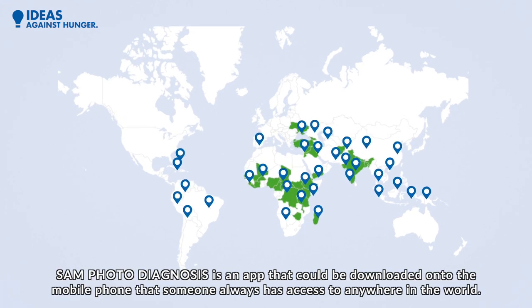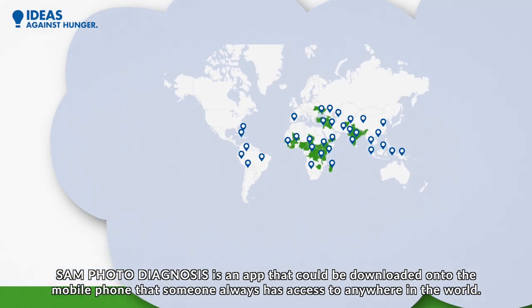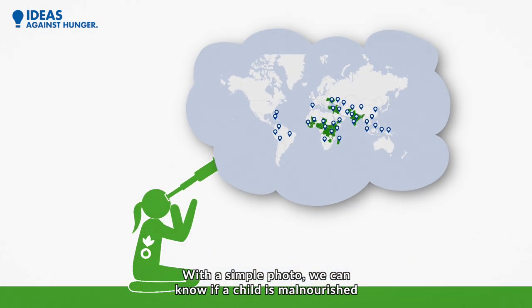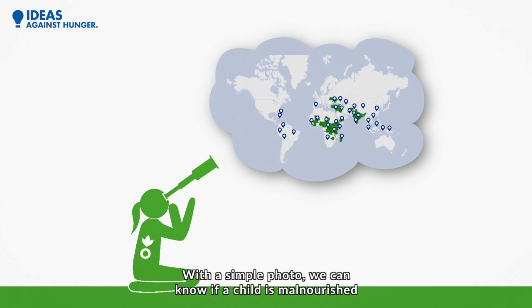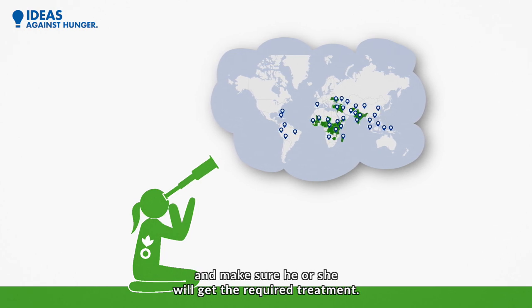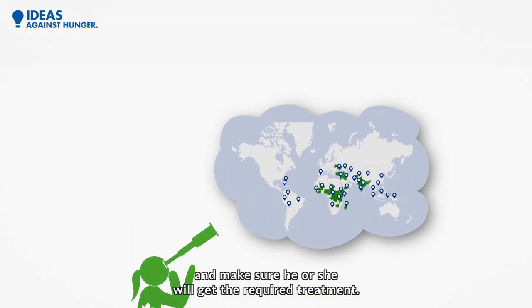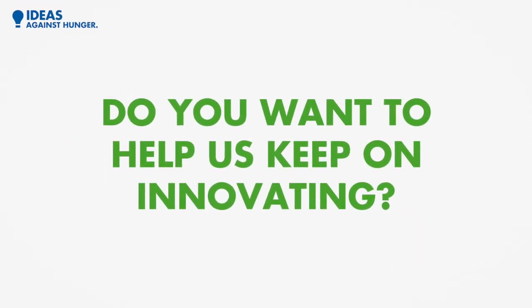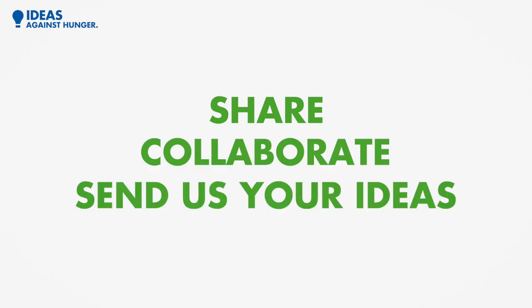Samphoto Diagnosis is an app that can be downloaded onto the mobile phone that someone always has access to anywhere in the world. With a simple photo, we can know if a child is malnourished and make sure he or she will get the required treatment. Do you want to help us keep on innovating? Share, collaborate, or send us your ideas.